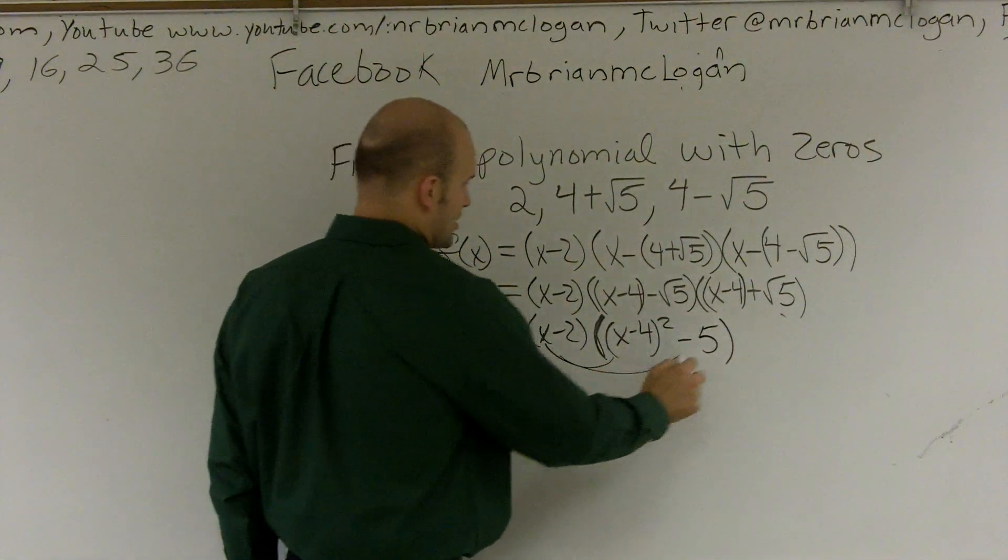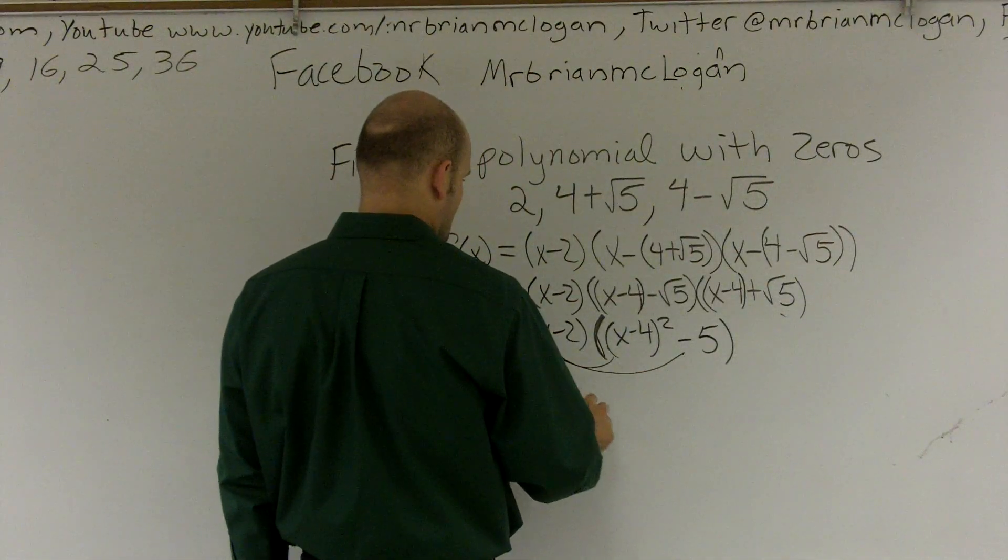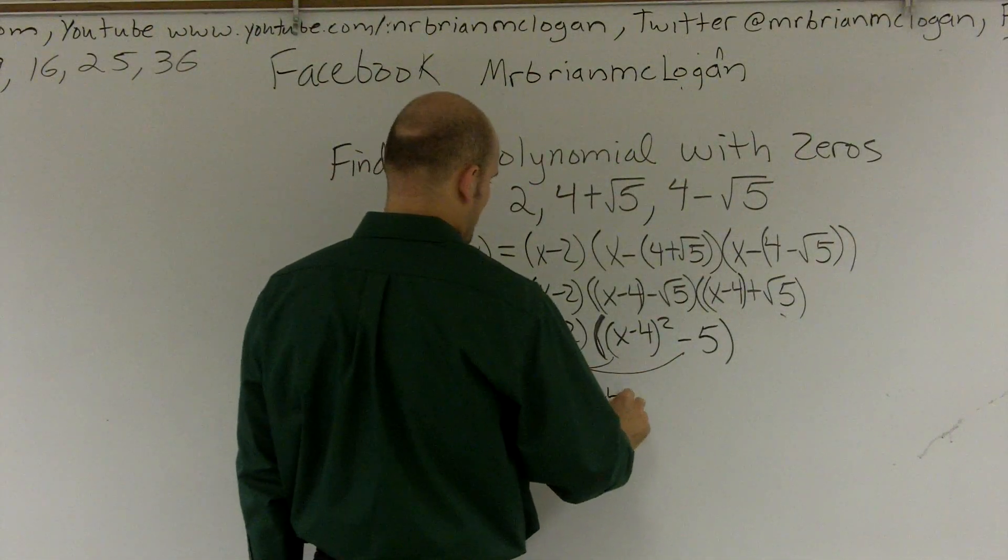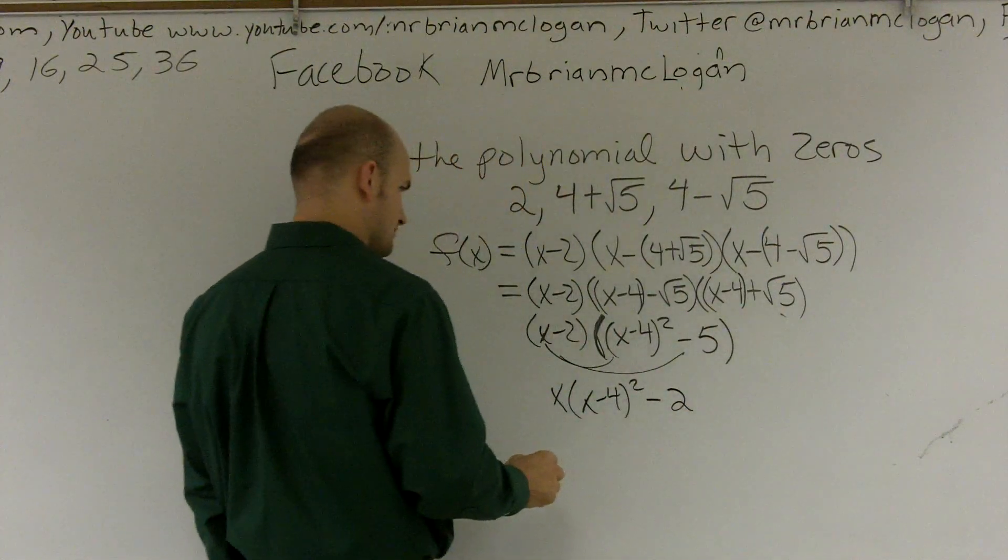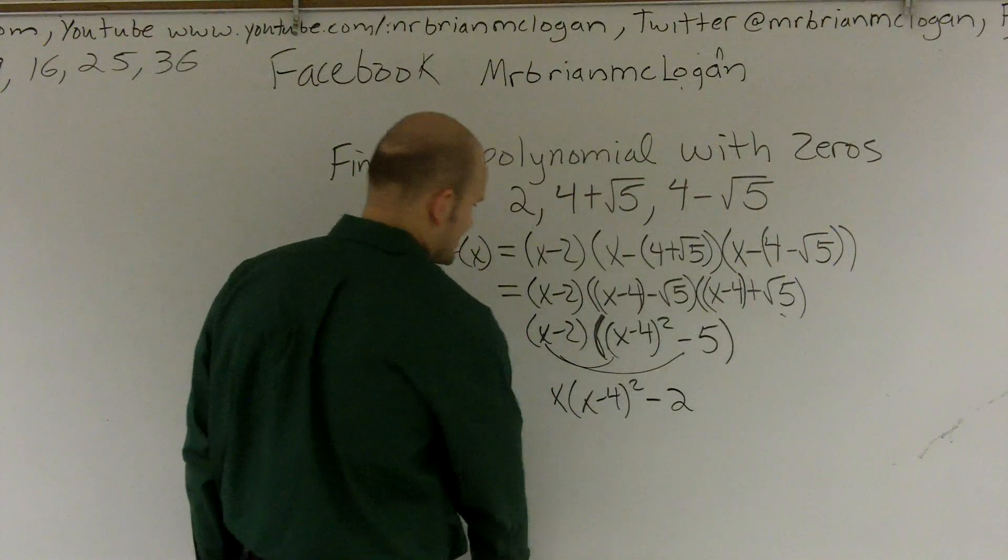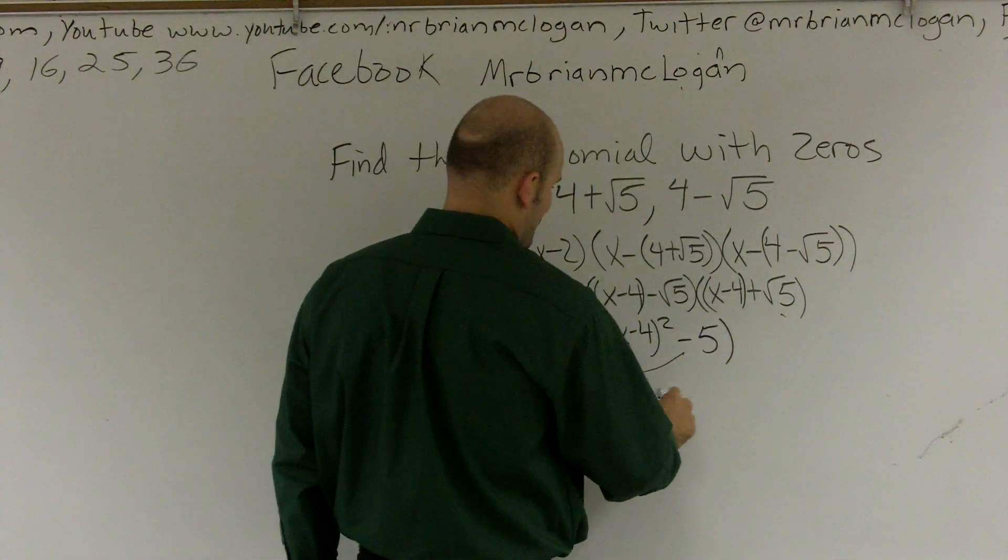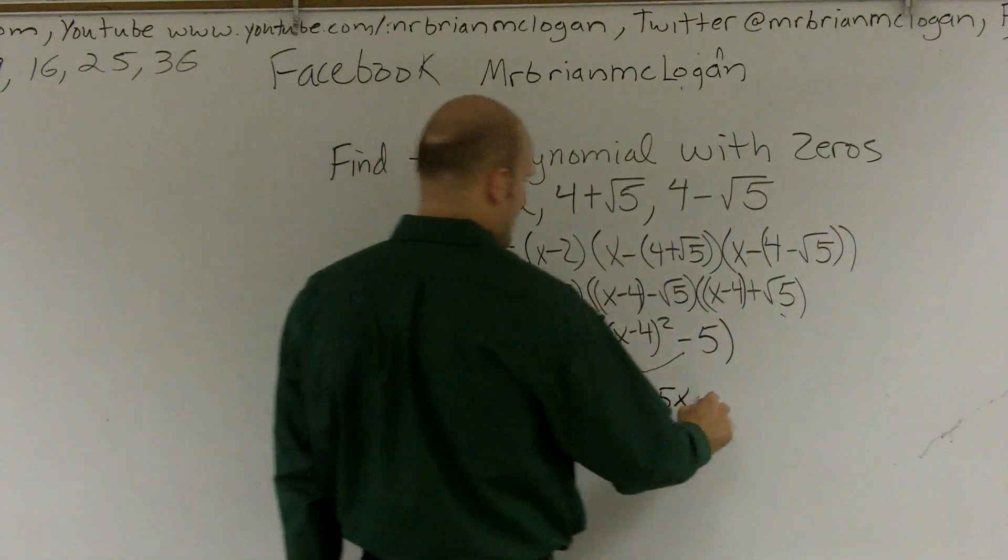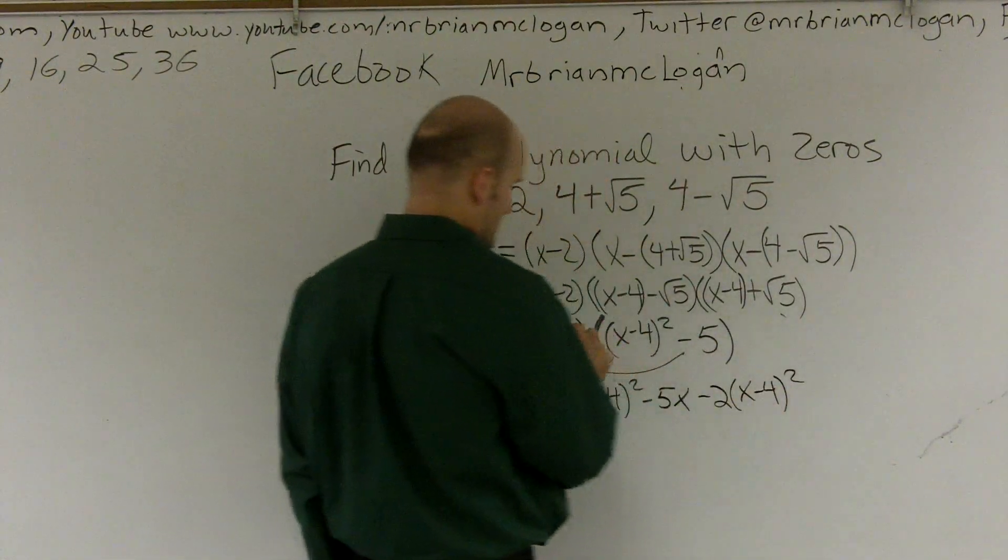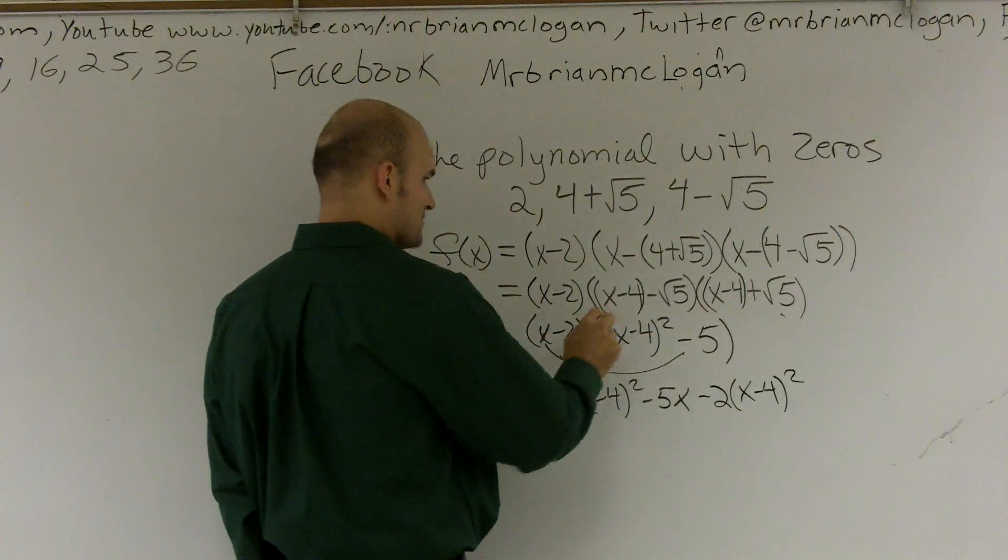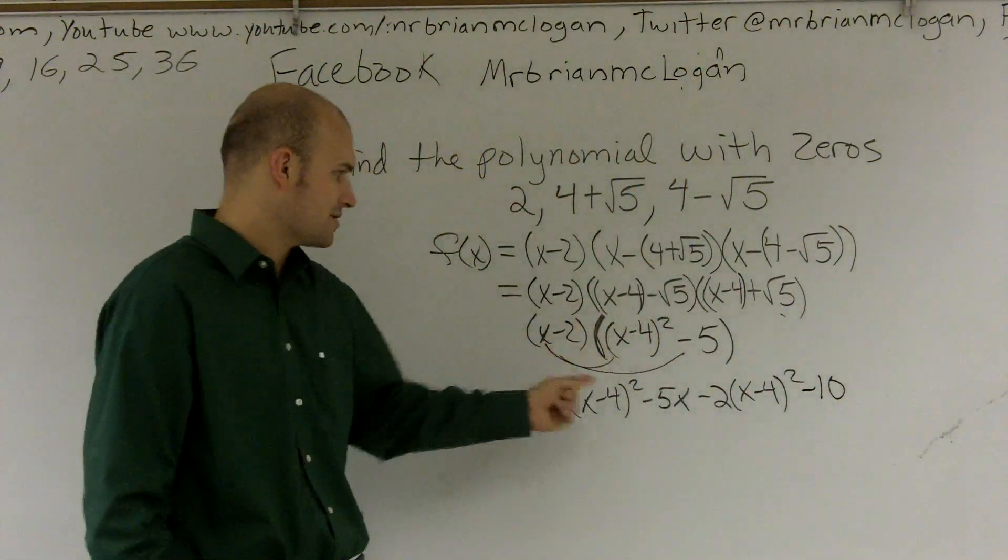Now I have to do a distributive property here. So I distribute the x to both of these terms. And I get x times x minus 4 squared. And then I get a negative 2 times x minus 4 squared. Remember, you've got to multiply both of those by all the terms.